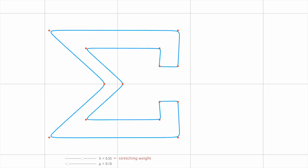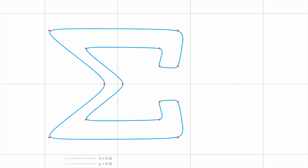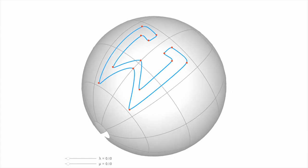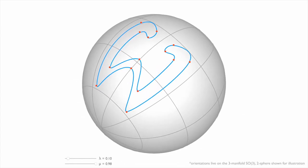Our filtering is based on smoothing splines, which minimize a weighted combination of stretching and bending while approximating the input. We use a generalization of this approach to curved spaces, since the orientations live on a Riemannian manifold.